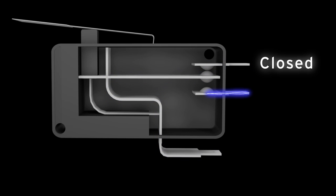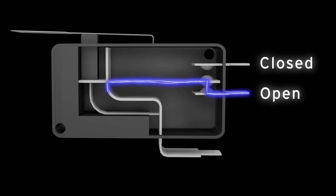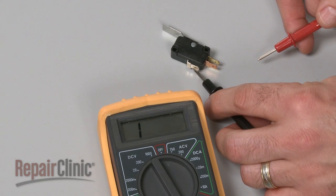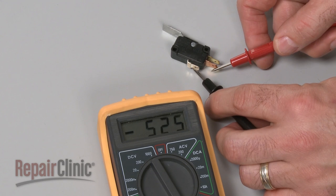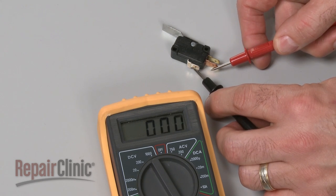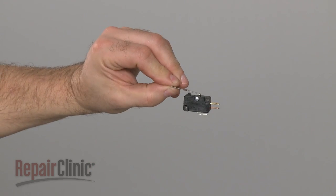Likewise, the normally open terminal should only provide continuity after the switch has been actuated. If a terminal tests positive for continuity when it should not, it's likely that the switch has shorted closed and will need to be replaced.